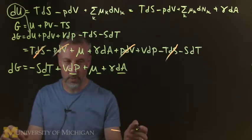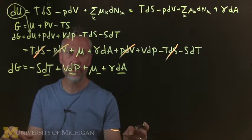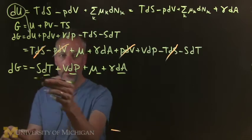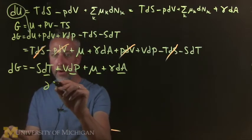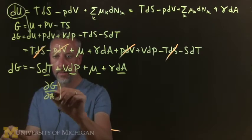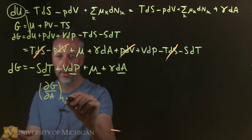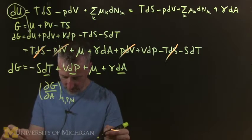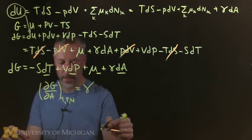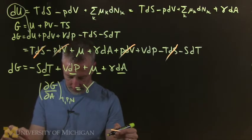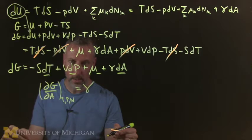So from our formula for these thermodynamic forces, now it's the G equation. From this we know that it's the partial derivative of G with respect to the area at constant everything else, T, P, and N. That's the force, meaning that acts like a force. That's the surface tension.